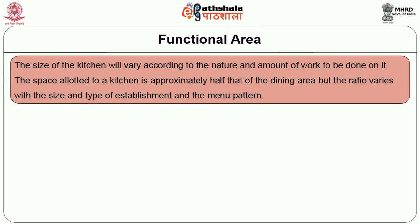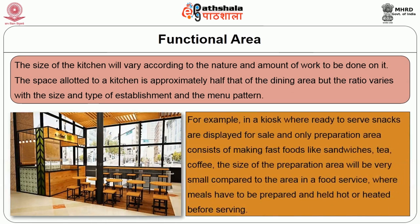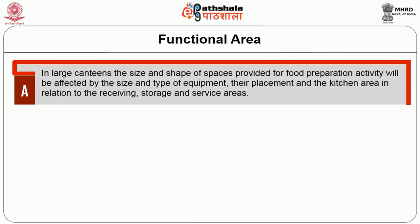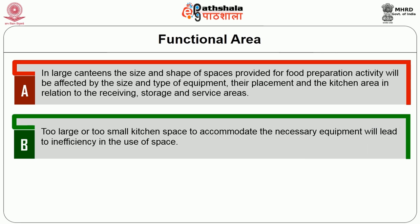The space allotted to a kitchen is approximately half that of the dining area, but the ratio varies with the size and type of establishment and the menu pattern. For example, in a kiosk where ready-to-serve snacks are displayed and only preparation of fast foods like sandwiches, tea and coffee is done, the preparation area will be very small. In large canteens, the size and shape of spaces will be affected by equipment size and placement. Too large or too small kitchen space leads to inefficiency — too small causes overcrowding while too large involves extra walking and high fixed costs.